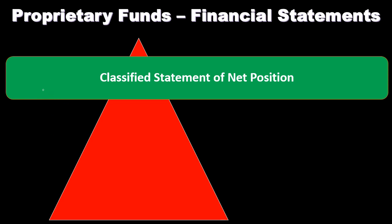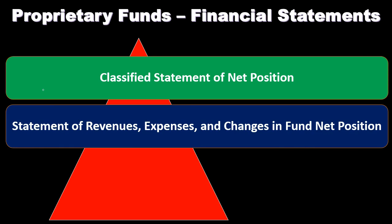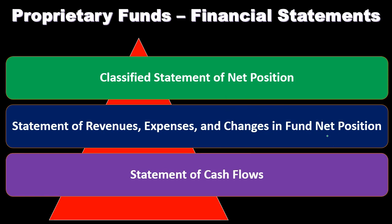Proprietary funds' financial statements include a classified statement of net position, similar to a balance sheet. Then we have the statement of revenues, expenses, and changes in fund net position — similar to an income statement. The use of the term 'expenses' rather than 'expenditures' indicates the accrual basis, as does 'net position' rather than 'fund balance,' which is used in governmental accounting. We also have the statement of cash flows, making this look similar to a for-profit type of organization.